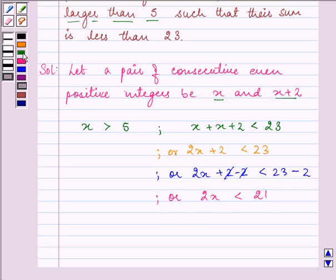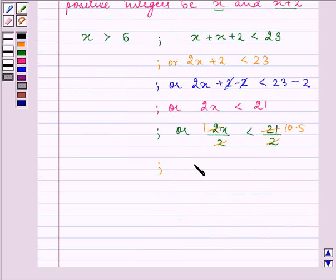Dividing both the sides by positive 2, we have 2x divided by 2 is less than 21 divided by 2. Which gives us the value of x is less than 10.5. And also,